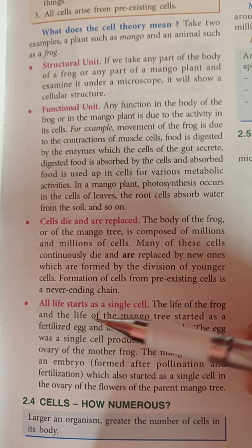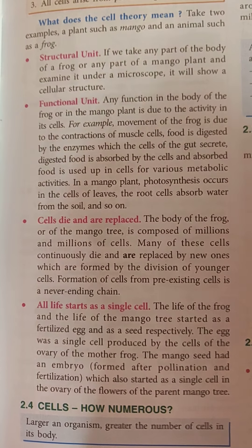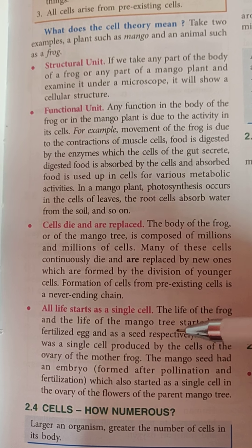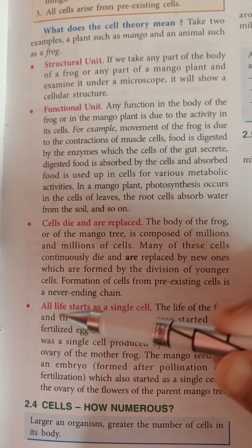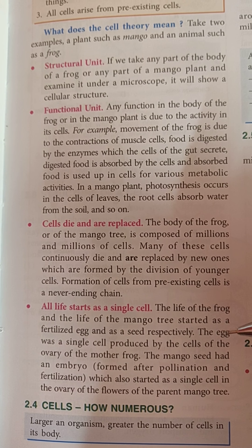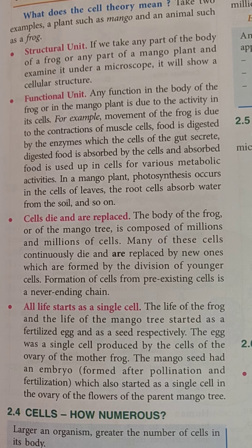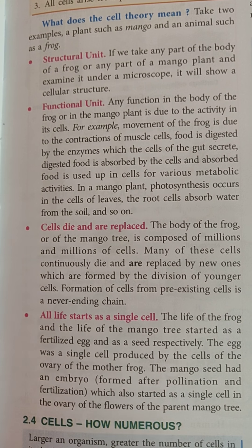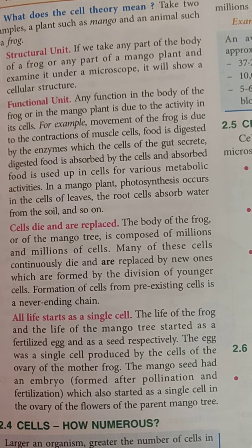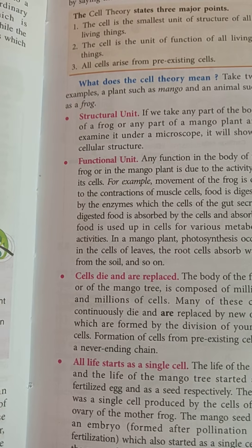One more point has been added in explaining the cell theory: all life starts as a single cell. If we consider multicellular organisms, all life starts when an embryo is formed, or when a zygote is formed. The life of the frog and the life of the mango tree started as a fertilized egg — which we call a zygote — and as a seed, respectively. The egg was a single cell produced by cells of the ovary, and the mango seed had an embryo within it which gave rise to an entire mango tree. Similarly, the fertilized egg or zygote gave rise to the frog.